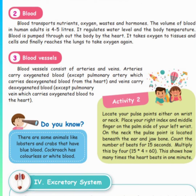Next, blood. Blood transports nutrients, oxygen, waste, and hormones. The volume of blood in a human adult is 4 to 5 liters. It regulates the water level and the body temperature. It takes oxygen to the tissues and cells, and finally reaches the lungs to take in oxygen again.